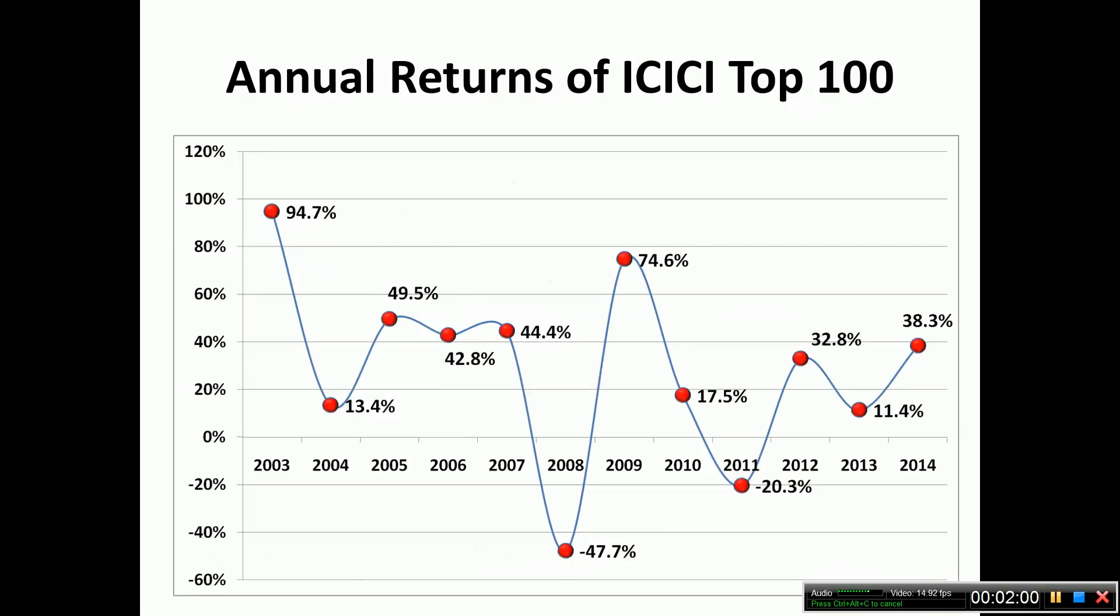Now if you look at the annual returns of ICICI Top 100, the returns have fluctuated quite a lot obviously because it's an equity investment. After one year the return would have been a spectacular 94.97%. Next year it's 13.4%, then 49%, 42%, 44%, and then minus 47%, then 74%, 17%, minus 20%, again 32%, 11.4%, and 38.3%. These are the annual returns.